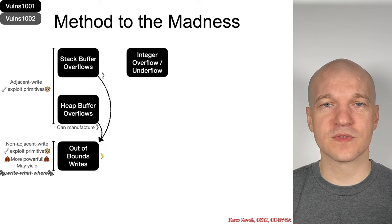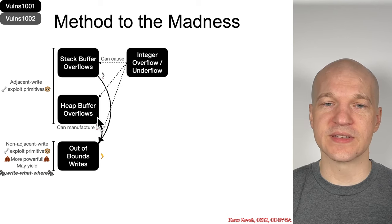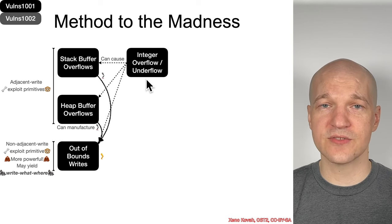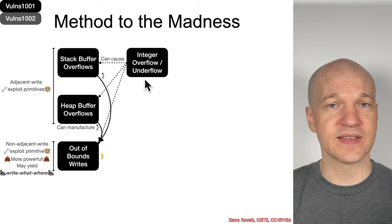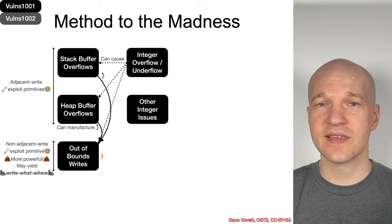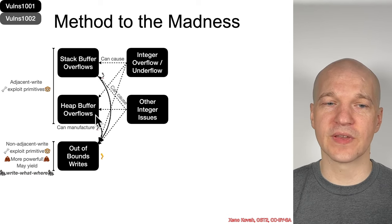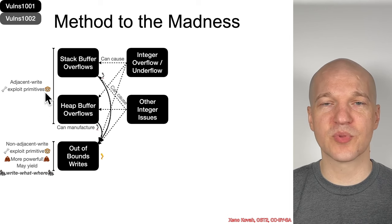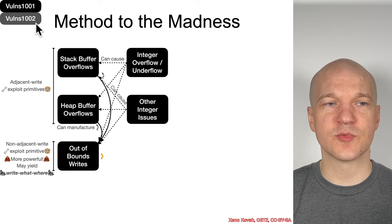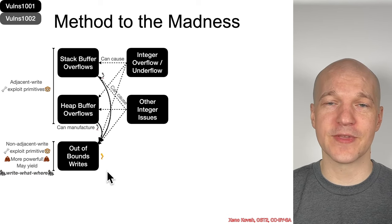Then there are topics like integer overflows and underflows, whose whole point is that they can cause these other vulnerability types. An integer overflow in itself is not actually that interesting — it's only interesting insofar as it causes a stack overflow, heap overflow, or out-of-bound write. Same with other integer issues: signed sanity checks, integer truncation, sign extension. They're a grab bag of things that can cause these fundamental exploit primitives — adjacent writes and non-adjacent writes — to become available. That's our Vulnerabilities 1001 content: all directly related, forming a tight little nugget.